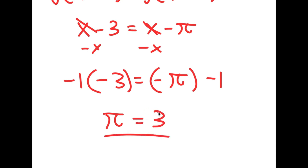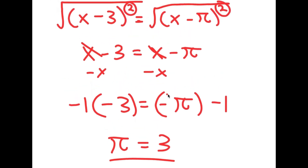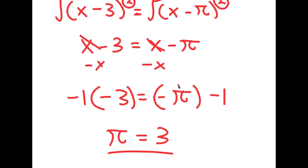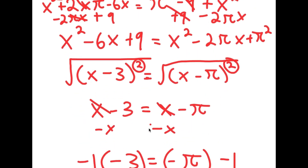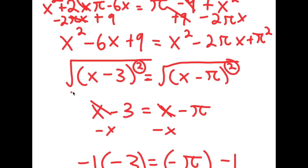So there you have it — I just proved that pi is equal to 3. So now, where did I go wrong? Because obviously we know that pi is not equal to 3. Well, I actually went wrong on this step right here, where I said that the square root of (x minus 3) squared and the square root of (x minus pi) squared is equal to x minus 3 and x minus pi respectively.